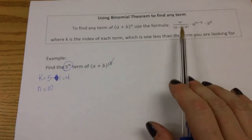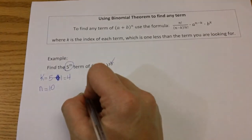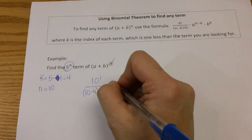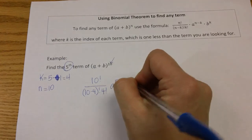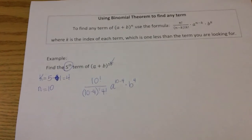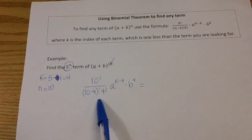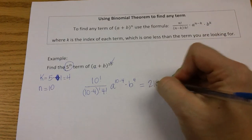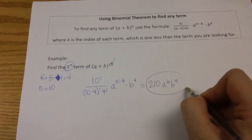Plugging into the formula, we get 10 factorial over (10 minus 4) factorial times 4 factorial, times a to the 10 minus 4, times b to the fourth. The first part — 10 factorial divided by 6 factorial times 4 factorial — you plug that into your calculator and get 210. So the fifth term is 210 a to the sixth b to the fourth.